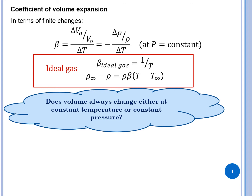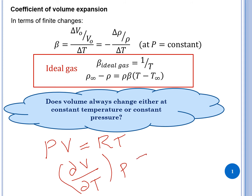For an ideal gas, beta is simply the reciprocal of temperature: beta equals 1 over T. For comparison, the compressibility was directly proportional to pressure, whereas here beta is inversely proportional to temperature. This result comes from the ideal gas law.